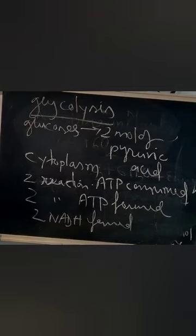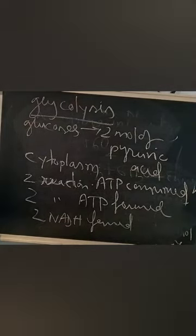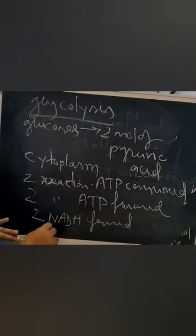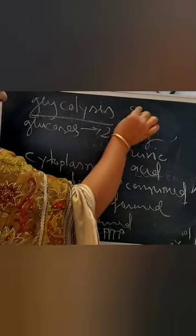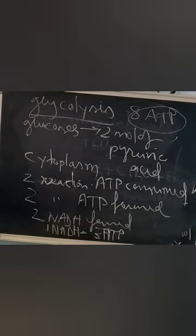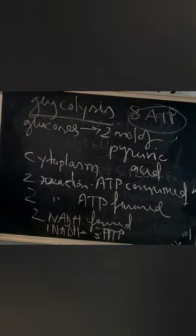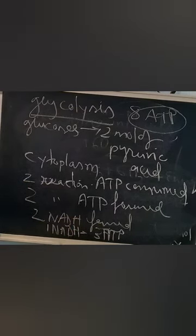For the net gain of ATP through glycolysis: 1 NADH is equivalent to 3 ATP molecules when it undergoes the electron transport system. Four ATP molecules are produced, two ATP molecules are consumed, and 2 NADH gives 6 molecules of ATP. All total, 10 ATP molecules are produced, minus 2 consumed, giving a net gain of 8 ATP molecules from glycolysis.